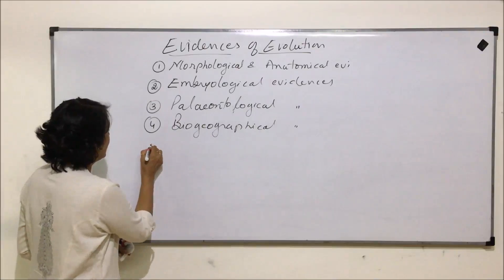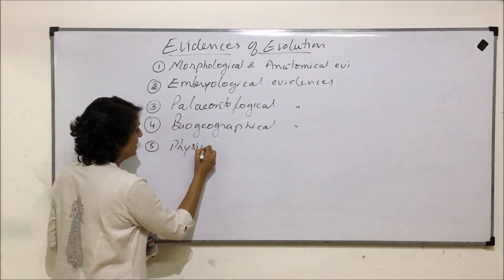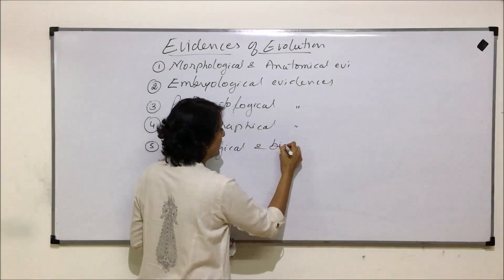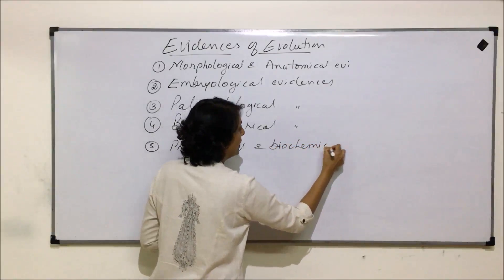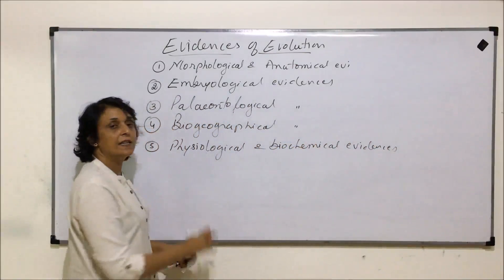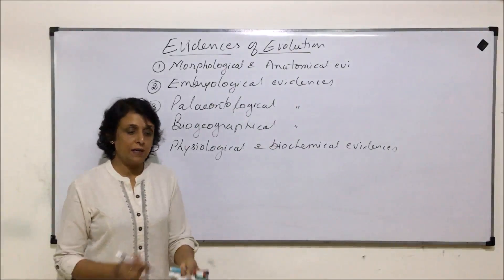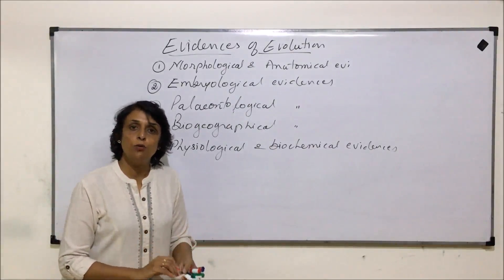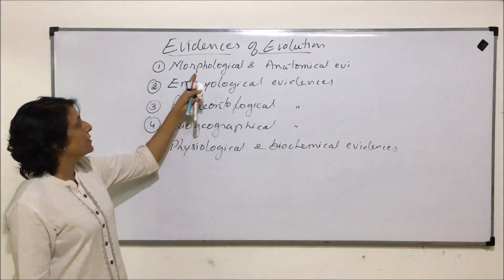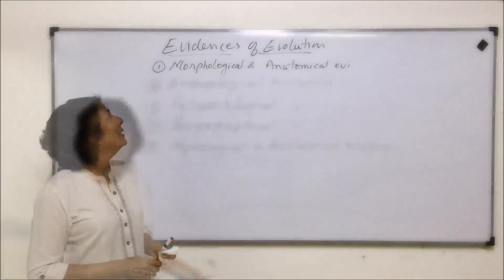The fifth category is physiological and biochemical evidences. Under this, we compare various physiological or metabolic activities and certain biochemical levels, like certain biomolecules, which help us understand how evolution has taken place. Now let us start with the morphological and anatomical evidences first.